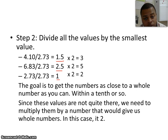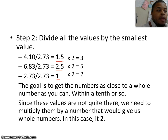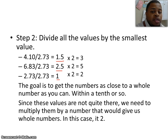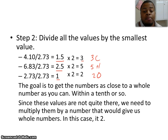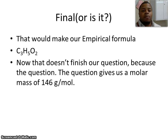This leads us to our empirical formula. Since I have 1.5 multiplied by 2, that gives me a value of 3 — meaning I'm going to have 3 carbon in my empirical formula. 2.5 times 2 means I'm going to have 5 hydrogen. And 1 times 2, I'm going to have 2 oxygen in my empirical formula. Once we've multiplied, we have our empirical formula — we can celebrate, almost.